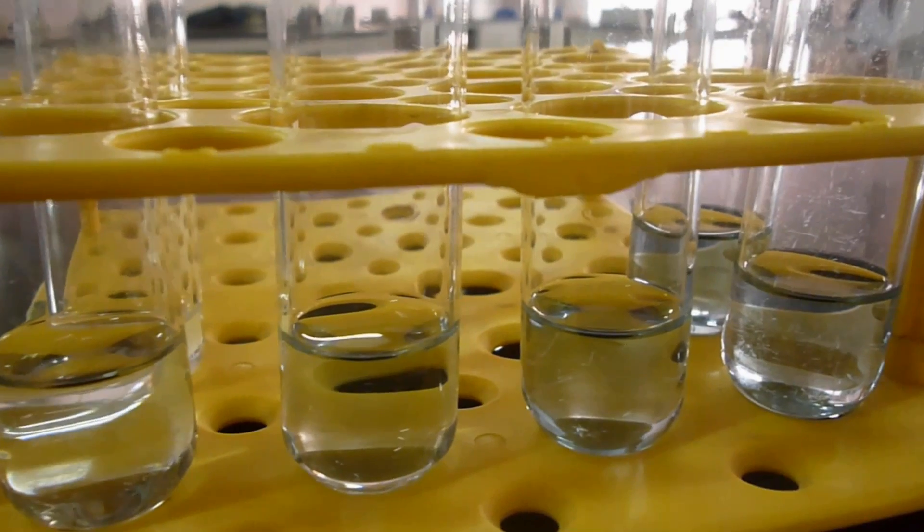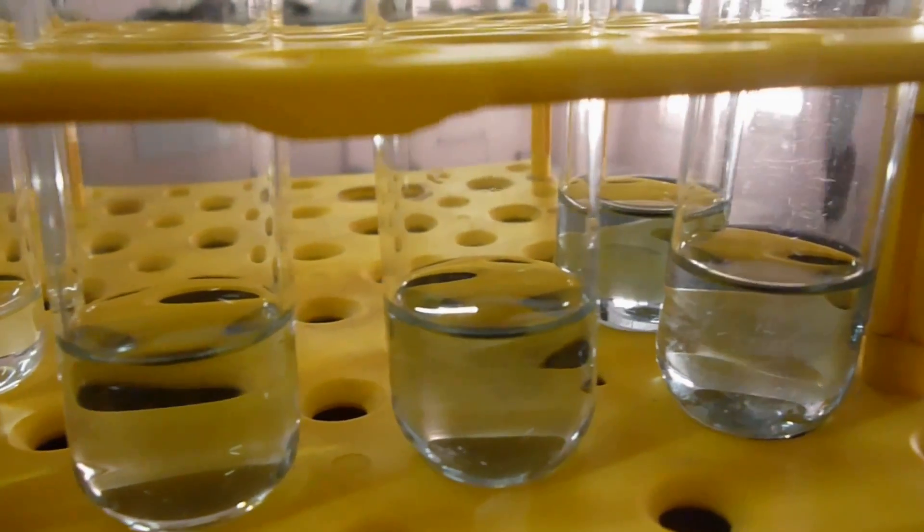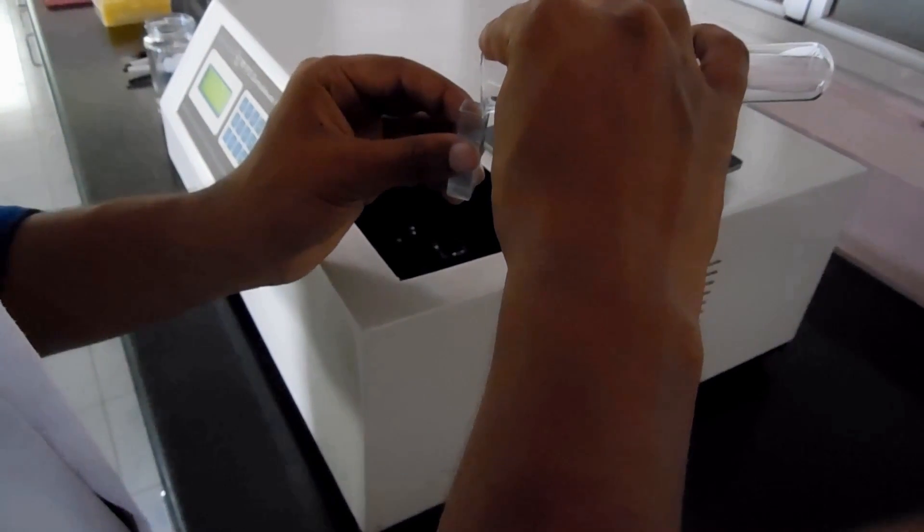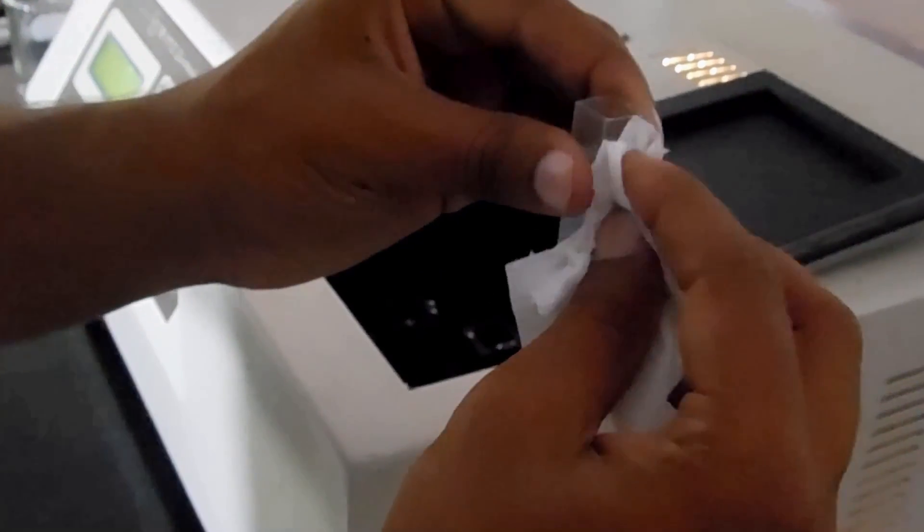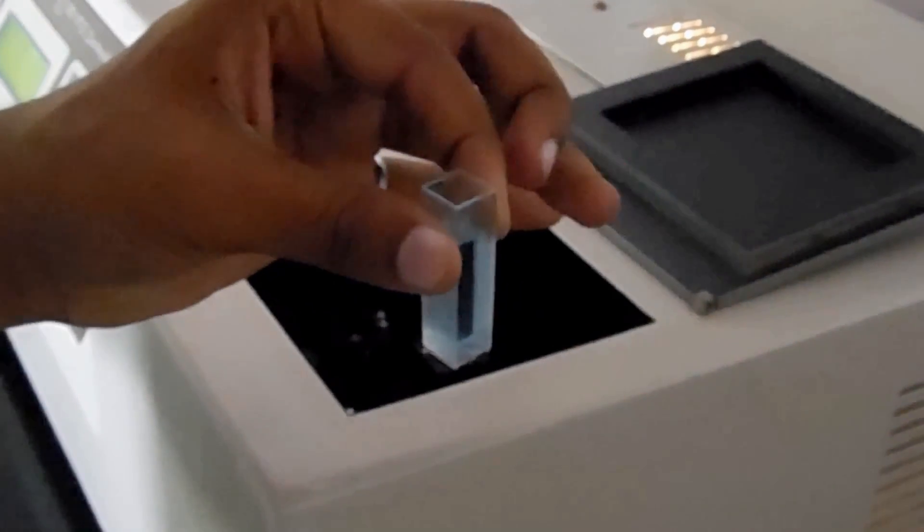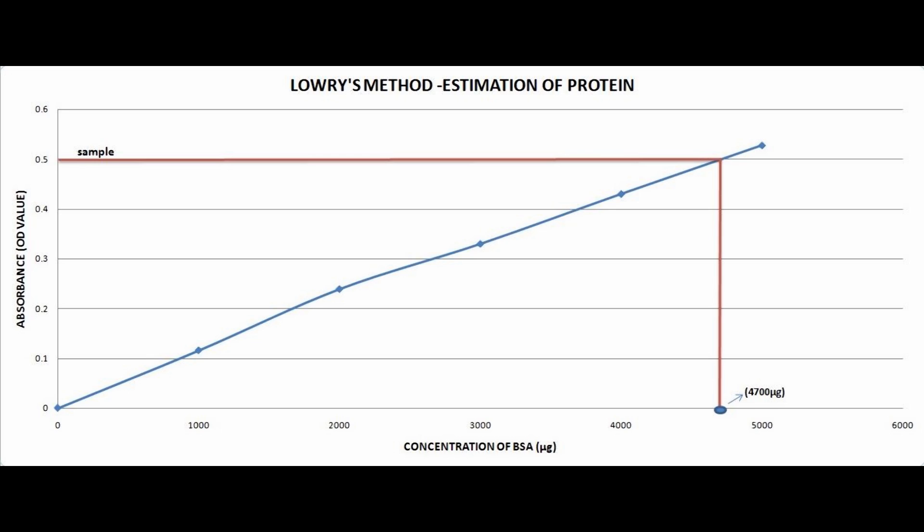After 30 minutes of incubation, the blue color will be formed. Blue color developed in each tube can be measured at 660nm. Note down the absorbance OD value for each tube. Draw a standard curve using absorbance vs concentration in the graph. Find out the concentration of the total protein in the sample comparing its OD value with those of standard curve drawn using graph.